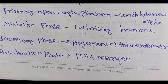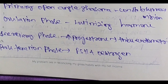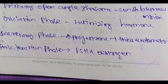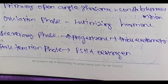Evolution (ovulation) phase: luteinizing hormone increases — peak. Secretory phase: increased progesterone for thickening the endometrium. So secretory phase — increased progesterone — thickening endometrium. Then proliferation phase: FSH plus estrogen.